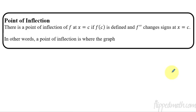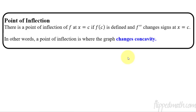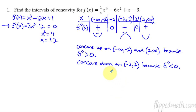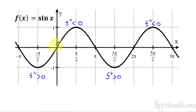Next up, we're going to talk about point of inflection. A point of inflection of f is at x equals c if f of c is defined, and the second derivative of f changes signs at x equals c. In other words, a point of inflection is where the graph changes concavity — when the graph changes from concave up to concave down, or concave down to concave up. So when we have something that changes right there, we have a point of inflection. Let's go back to our graph and label some points of inflection. So in between here it's concave up, and somewhere right around here is where it changes.